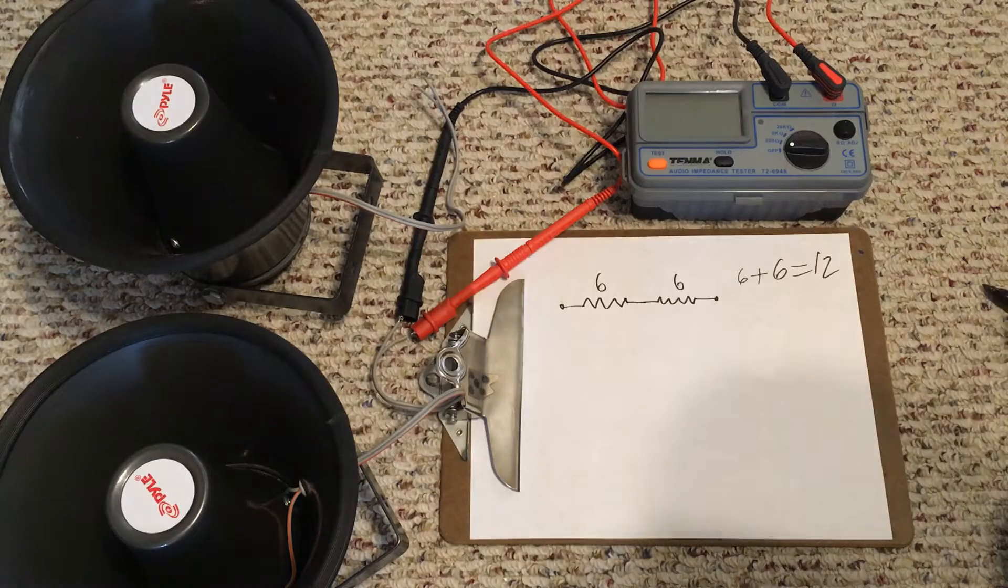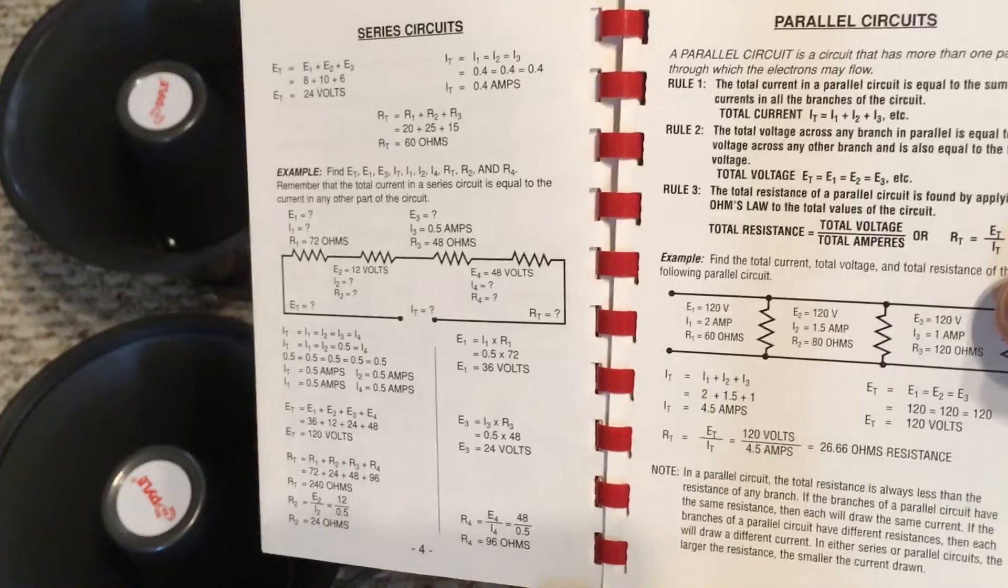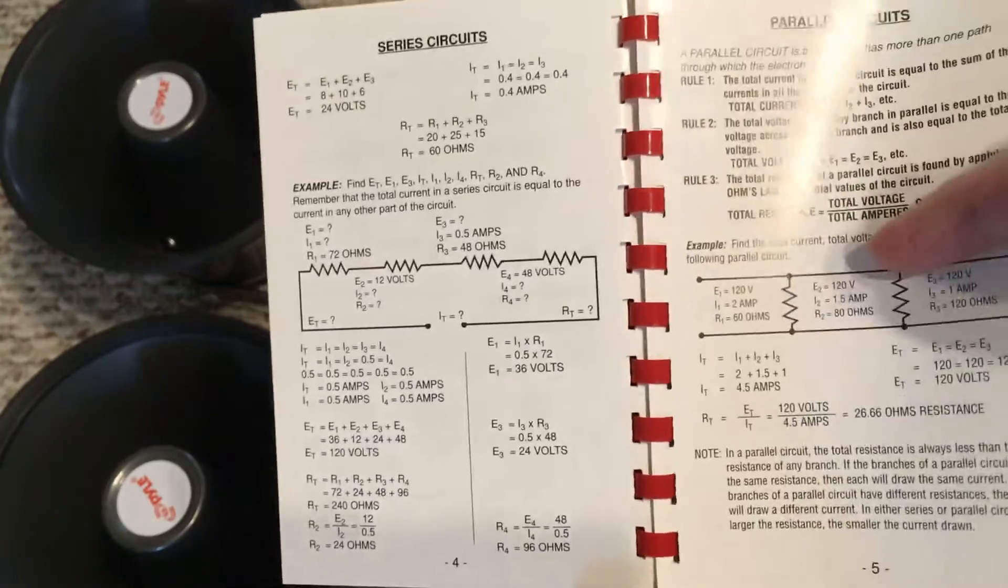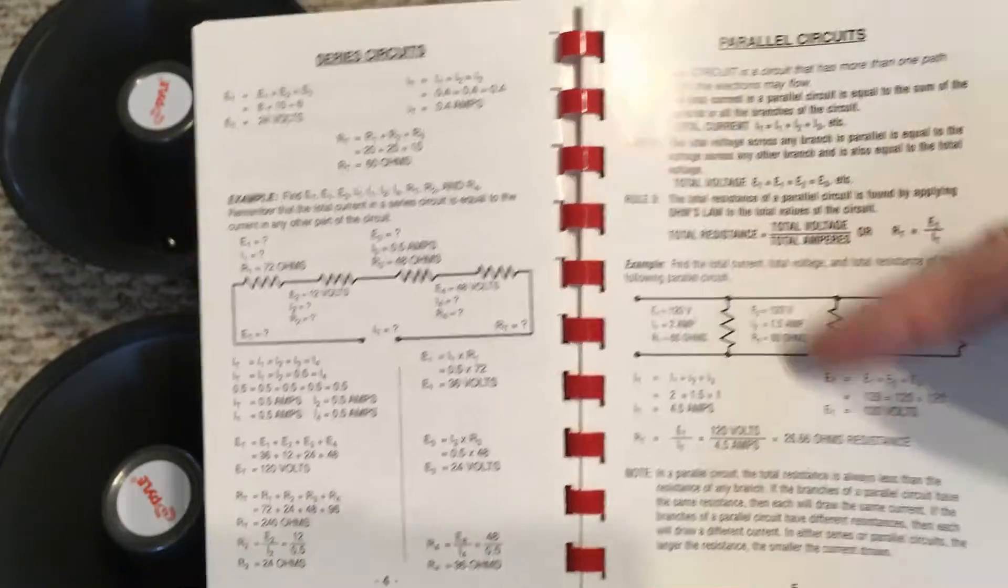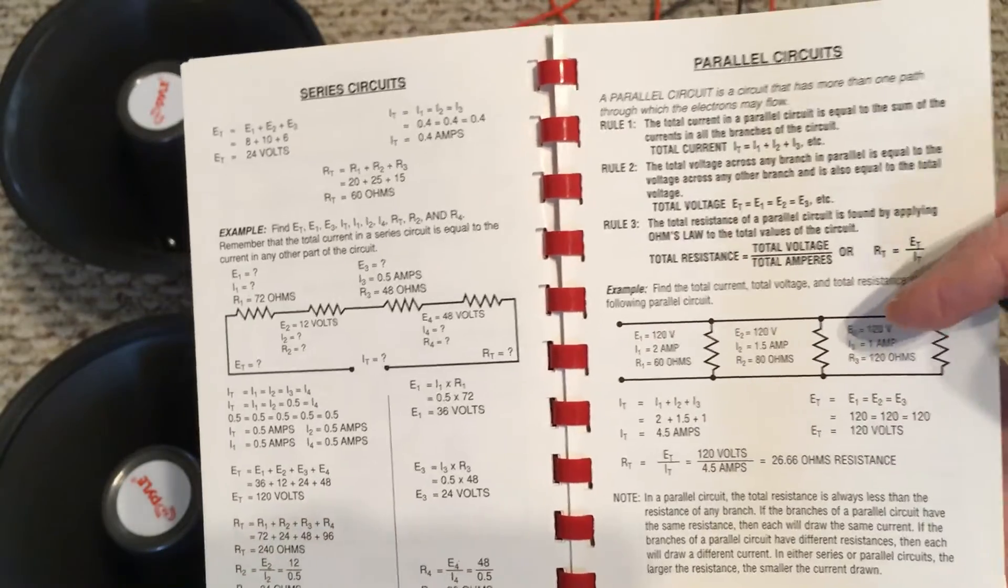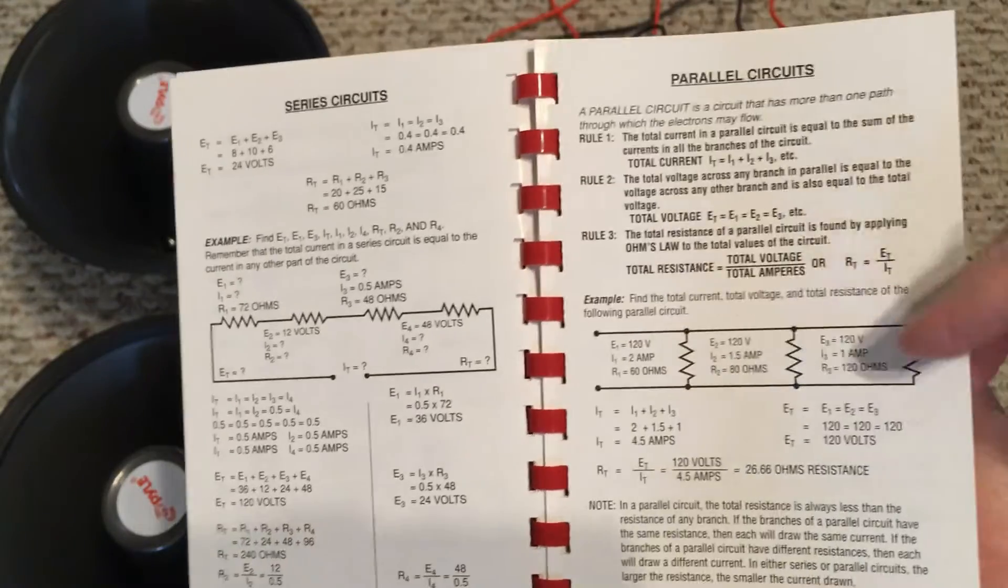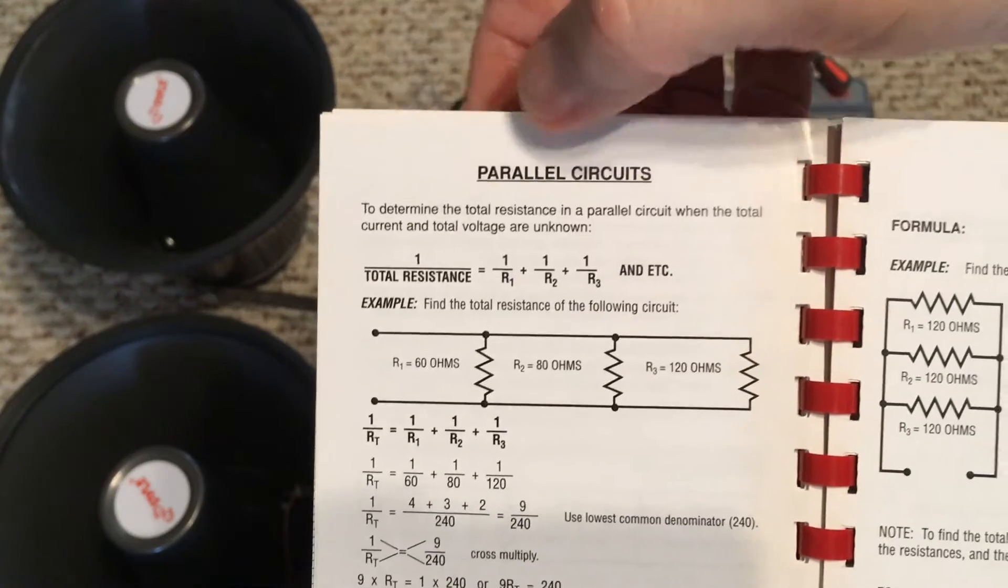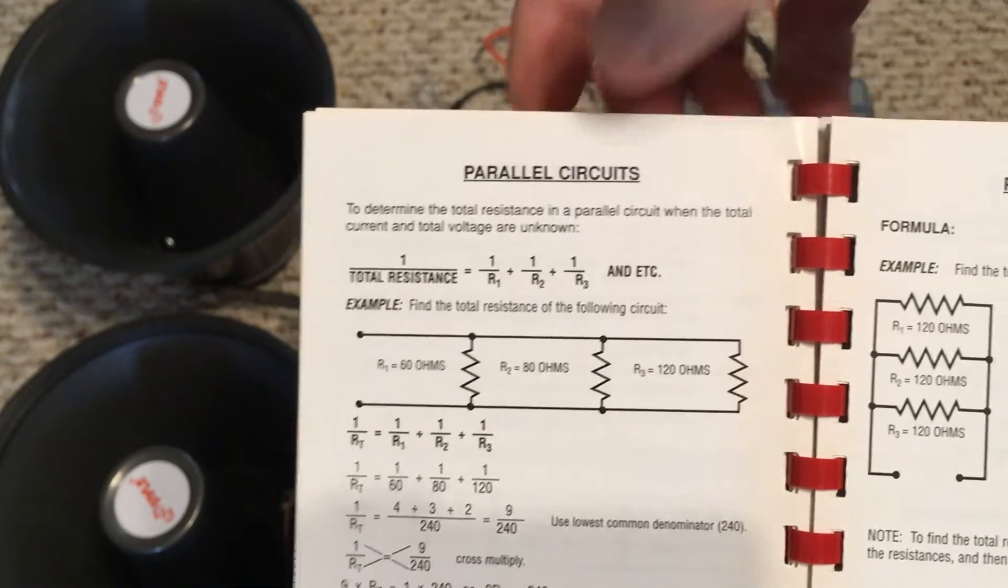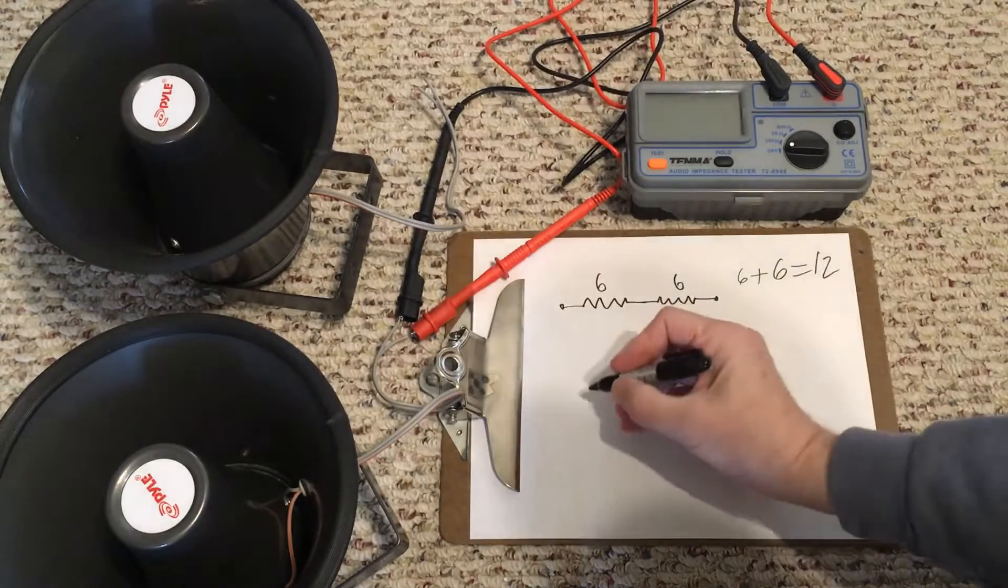The other way we can have a circuit is in parallel where they each split off the same. In this case you would see a third would go through each, but it gets more complicated if the resistance is different in each resistor. So the formula we use there is one over the first resistance plus one over the second resistance and so forth.